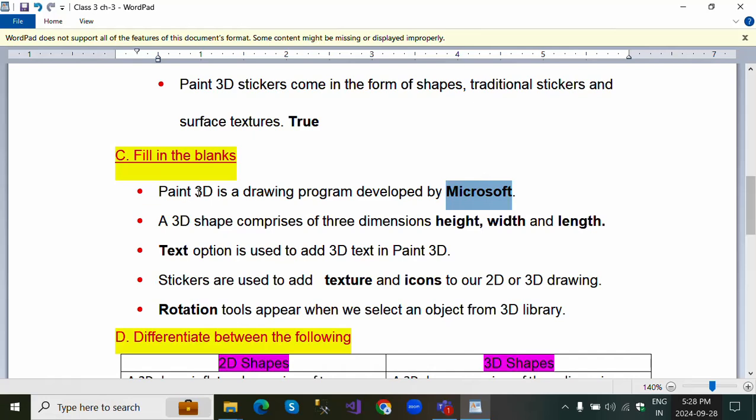A 3D shape comprises of three dimensions: height, width and length. Text option is used to add 3D text in Paint 3D.